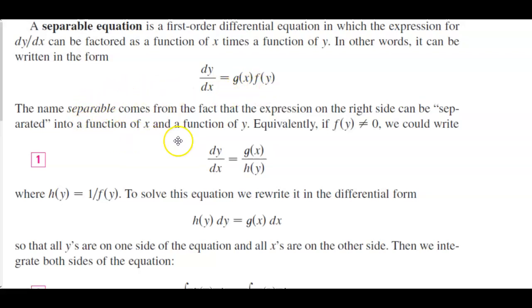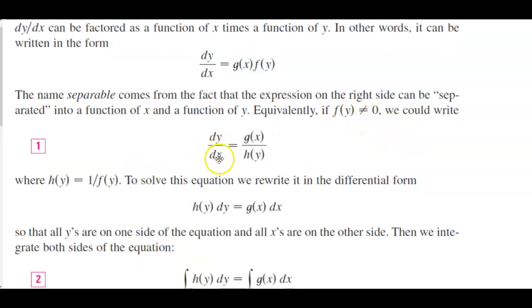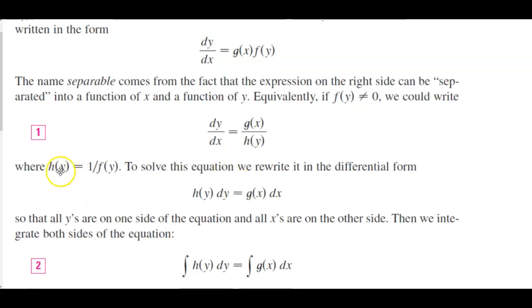The name separable comes from the fact that the expression on the right side can be separated into a function of x and a function of y. Equivalently, if f(y) does not equal 0, we could write dy/dx equals g(x) over h(y), where h(y) equals 1 over f(y).